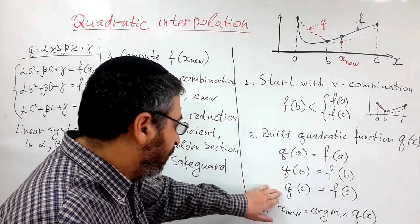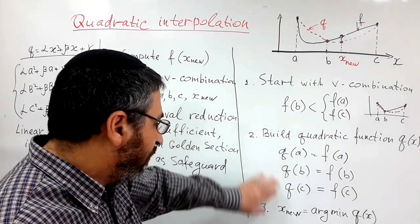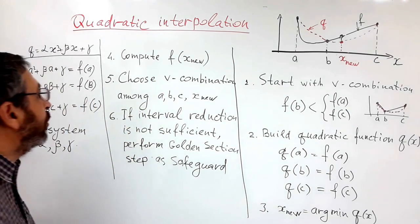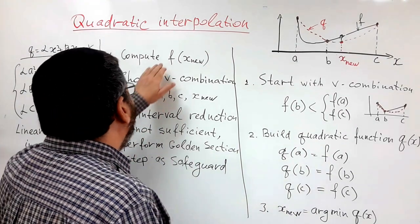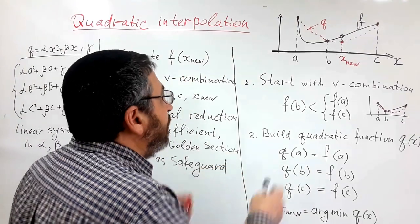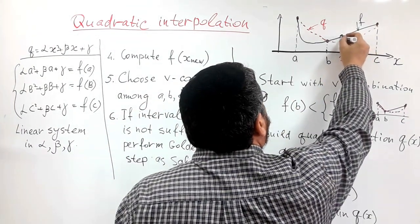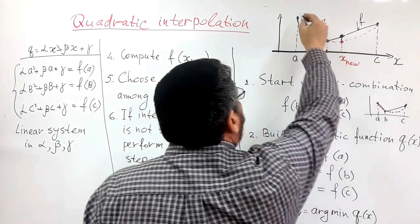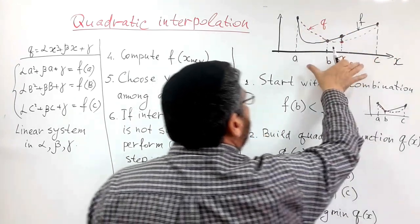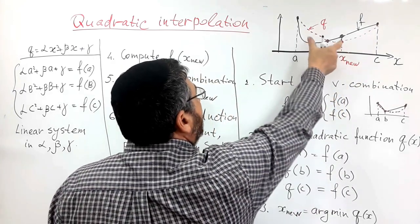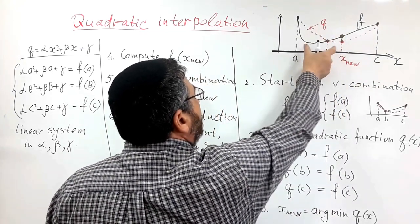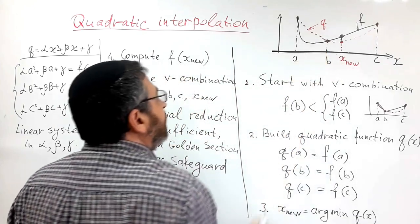Then, like I told, we build a quadratic parabola and find a new point. Afterwards, we compute function value at the new point, and among four points which we have—A, B, C, and X nu—we find V-combination with as small as possible support.